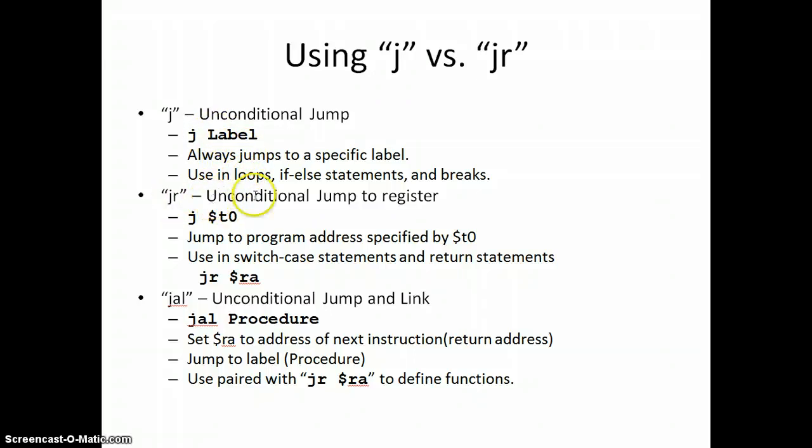JR is an unconditional jump to register. We can actually give it a variable and we can change what is stored in here, which allows us to implement switch case statements and return statements. What JR does is it jumps to a program address specified by whatever is inside of T0, which is really neat and very flexible. We use it for switch case statements and return statements.